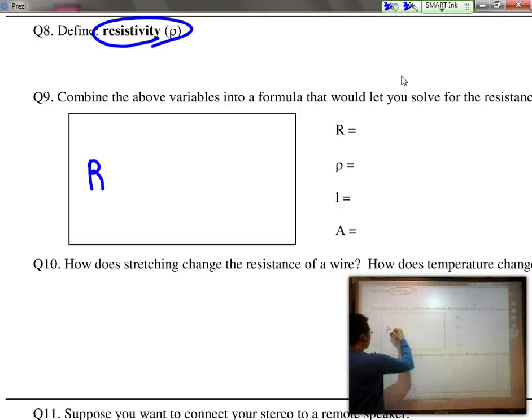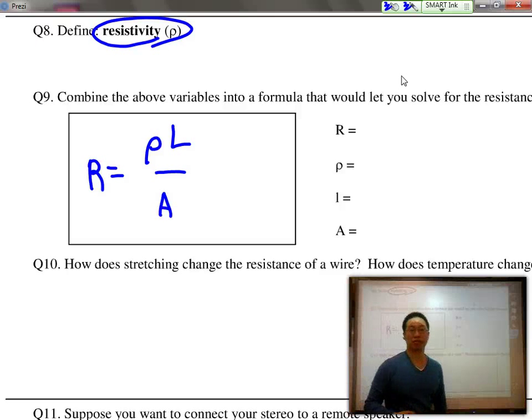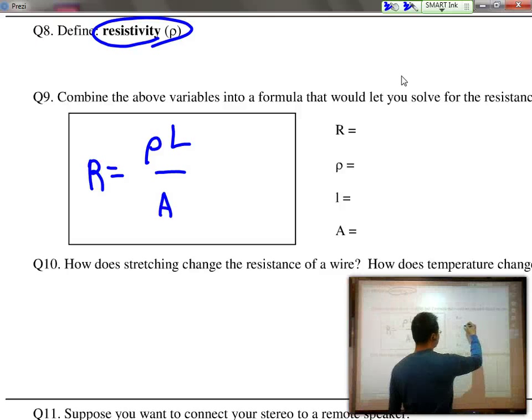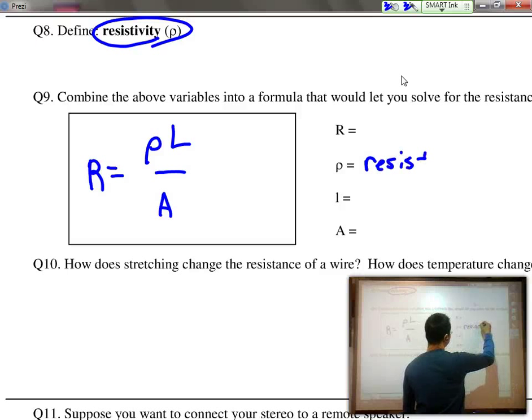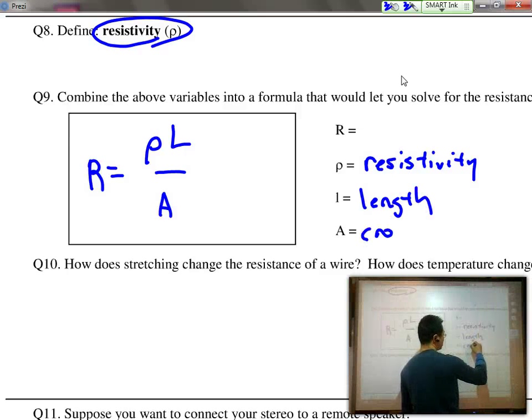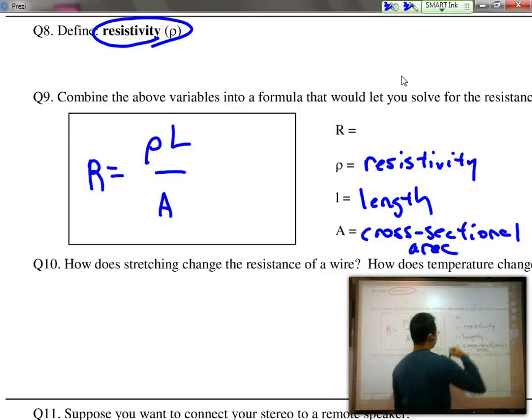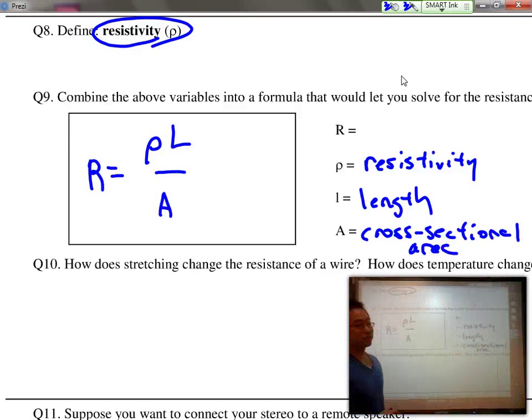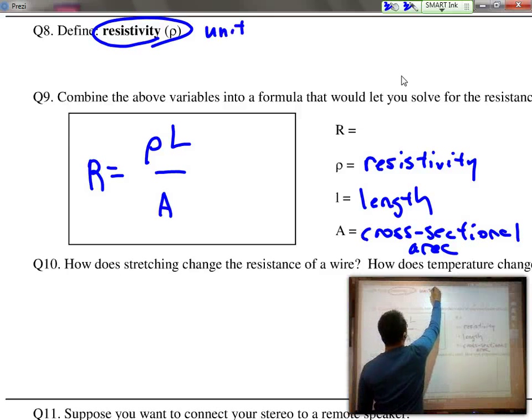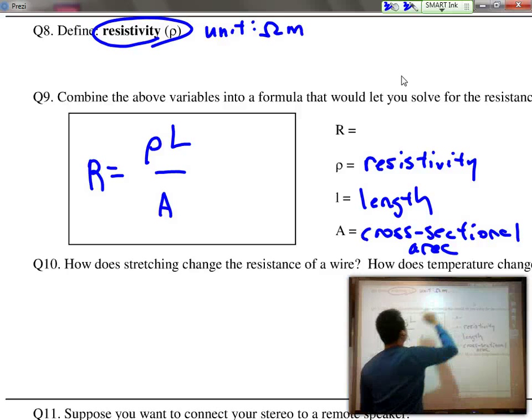The formula is R equals rho L over A. R stands for resistance, rho stands for resistivity, L is the length of the wire, and A is the cross-sectional area. The unit for resistivity is ohm meters.